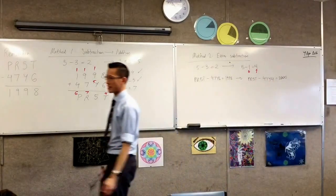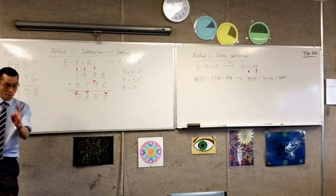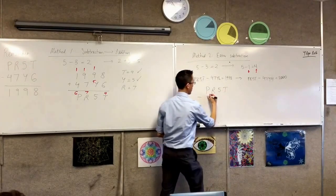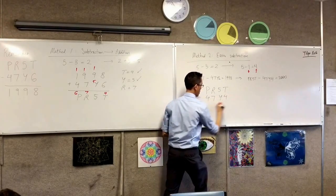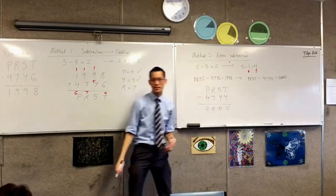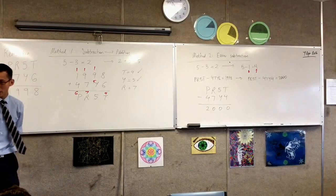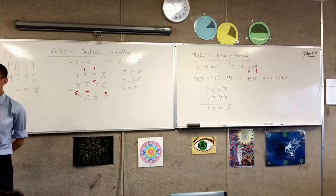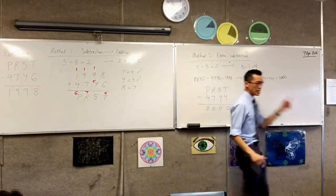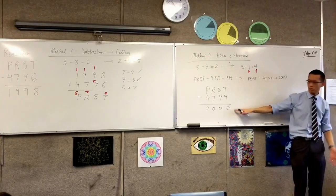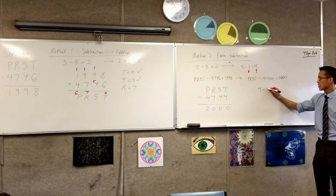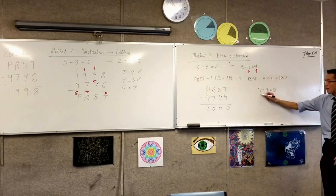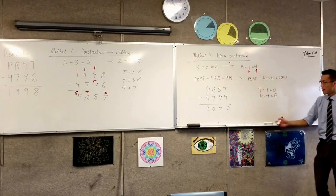Let's write this out in proper subtraction form. PR5T take away 47Y4 equals 2000. Watch how easy this is going to be. Think about the subtraction with me. T take away 4 is equal to 0. T take away 4 equals 0. So what number does T have to be? It's got to be 4. The only number that will work here is if T and 4 are the same number. So this has to be 4.